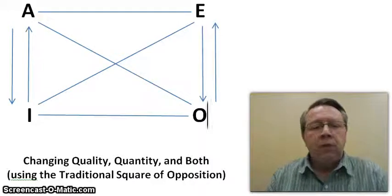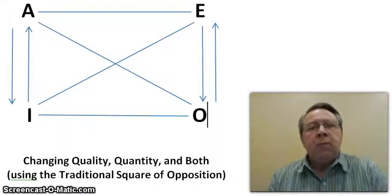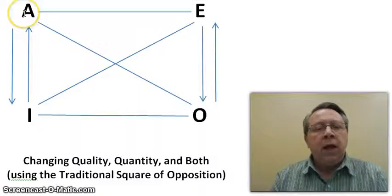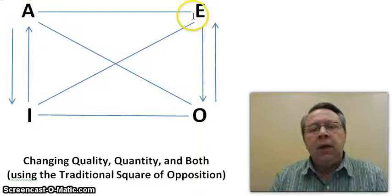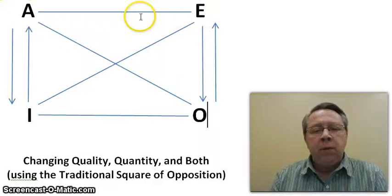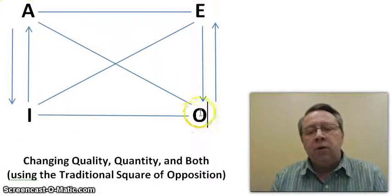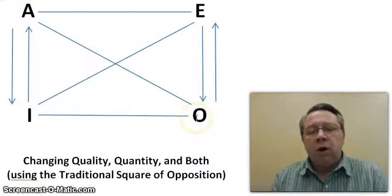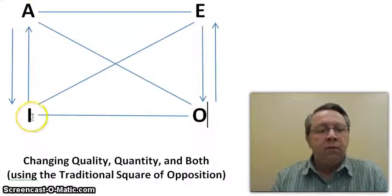To change the quality, what we're doing is changing it from a positive to a negative, or a negative to a positive. We know that A is 'all A are B' and E is 'no A are B.' So to change quality, you go from A to E or from E to A. Or you go from I to O or from O to I — some are, some are not. So we change it from an affirmative to a negative, or from a negative to an affirmative.